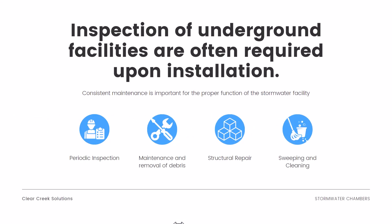However, these facilities do need to be inspected. Inspection of underground facilities is often required upon installation, and consistent maintenance is important for proper function. This includes periodic inspection by the installing company or local jurisdiction to ensure proper operation. There will also need to be maintenance and removal of debris, structural repairs when facilities break down due to stormwater events or other issues, and regular sweeping and cleaning to ensure the chambers are functioning properly.